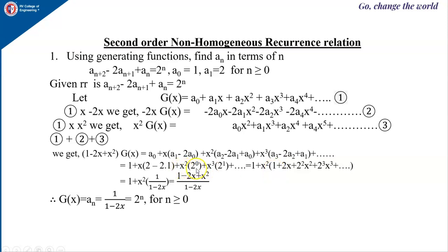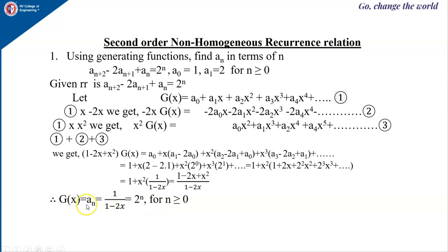So this becomes 1 + x²·(1 + 2x + 2²x² + 2³x³ + ···) = 1 + x²·(1/(1−2x)). This equals (1 − 2x + x²)/(1 − 2x). Since (1 − 2x + x²) = (1 − x)² cancels with the left-hand side factor, G(x) = 1/(1 − 2x), which is the generating function for 2ⁿ. Therefore, aₙ = 2ⁿ, for n ≥ 0. Thank you.